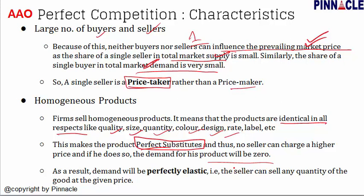Therefore no seller can change the price. If he changes the price, the demand will be zero. As a result, the demand will be perfectly elastic — meaning the seller can sell any quantity of goods at the given price. This given price is determined by the market demand and market supply. The demand is perfectly elastic.